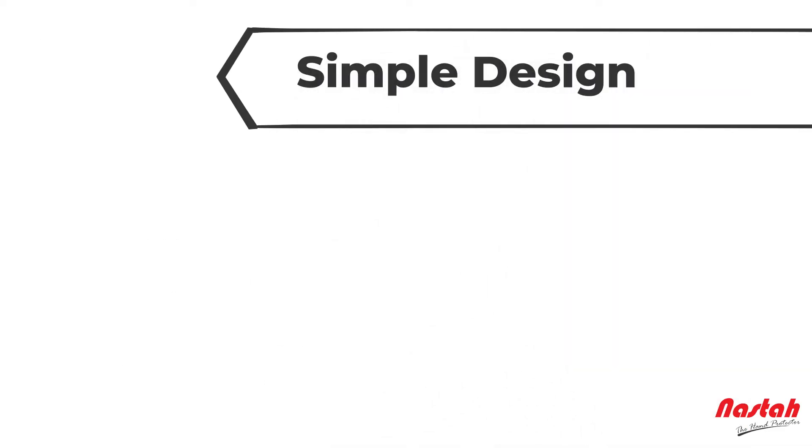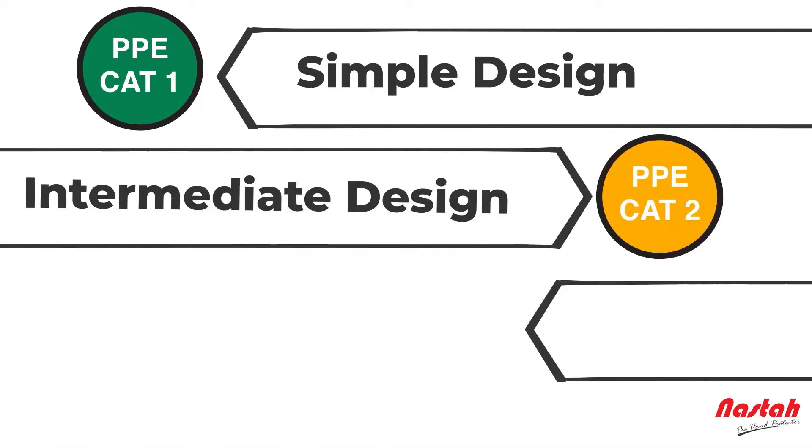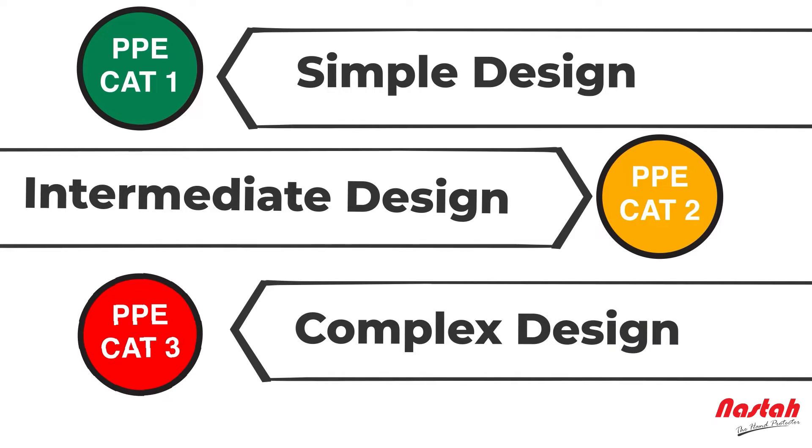Thus, PPE is categorized as simple design, often referred to as Category 1, intermediate design as Category 2, and complex design as Category 3.